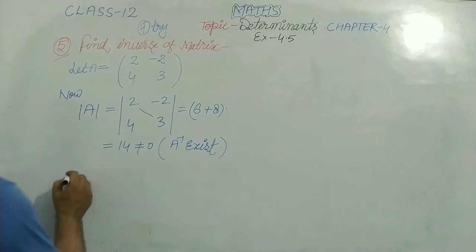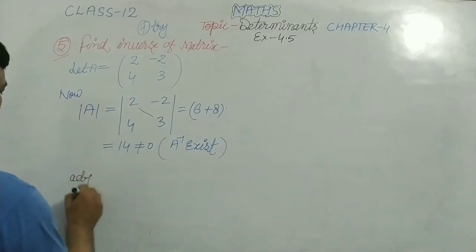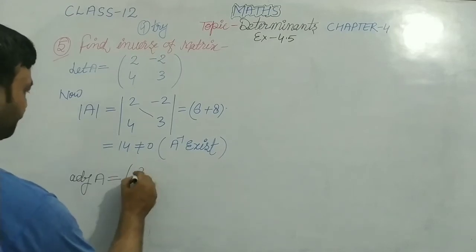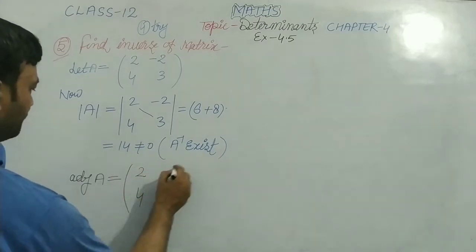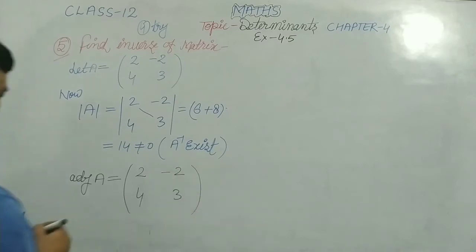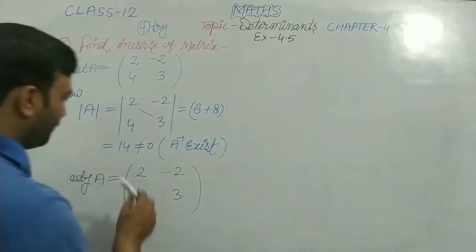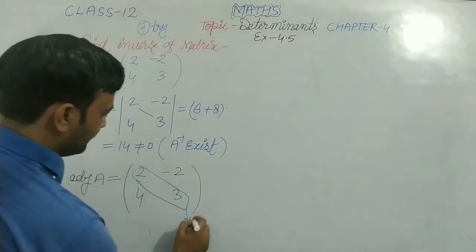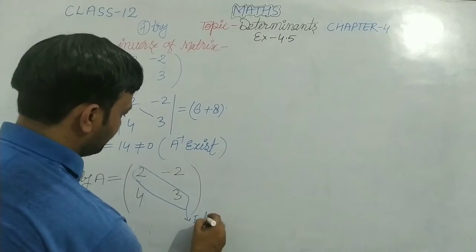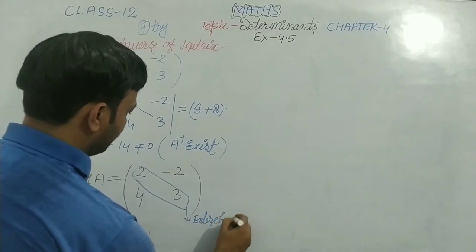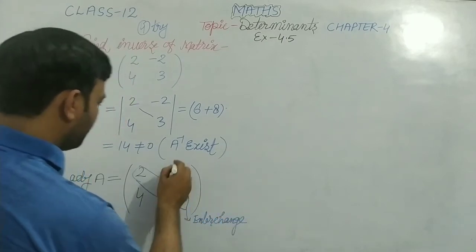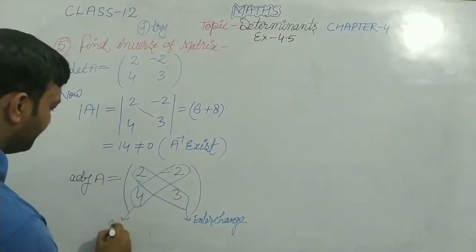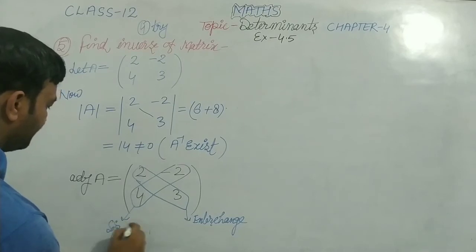Now we need to find the adjoint of A. To find the adjoint, the diagonal elements should be interchanged, and the off-diagonal elements should have their signs changed.